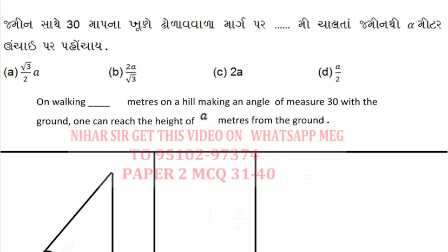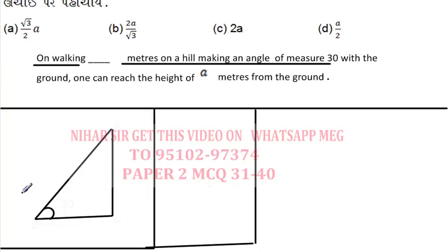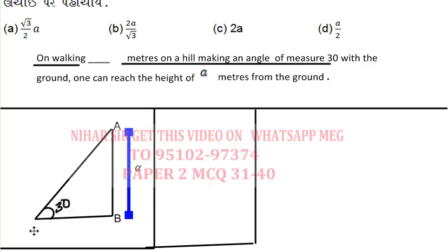Next question: on walking blank meters on a hill making an angle of 30 degrees with the ground, one can reach a height of alpha. Let me name this triangle — here the angle is 30 degrees, and I have to find AC. AC is my target.